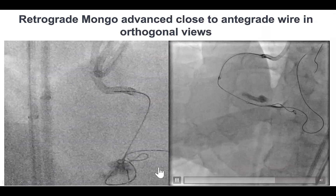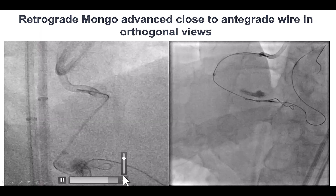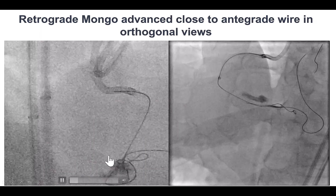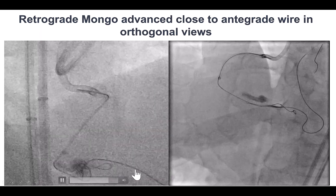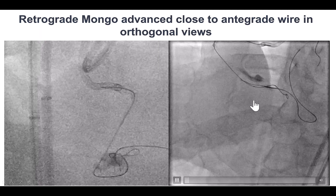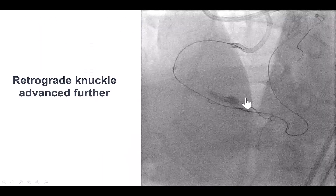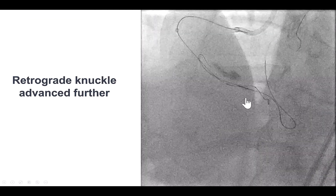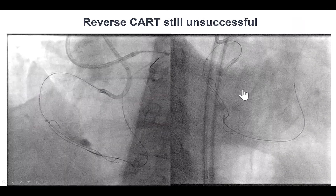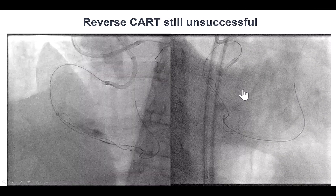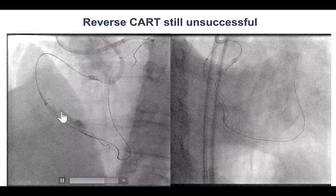What made a big difference was using the RAO view, in which we were able to visualize the course of the wire. Instead of having it go posteriorly, we tried to make it match the direction of the antegrade guide wire, and it advanced nicely across the course of the RCA. We then advanced the knuckle wire further — confirming we were extraplaque with the retrograde guide wire — and tried reverse CART again, but we were not able to make the connection, despite having a guide extension all the way to the distal RCA.